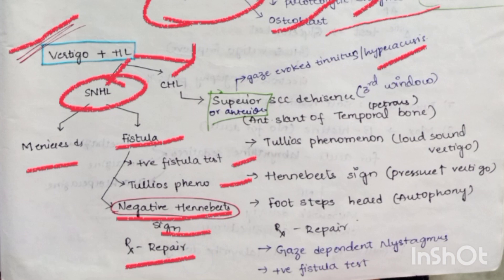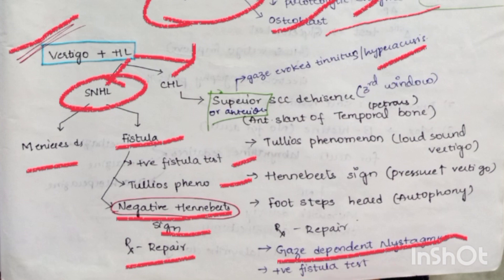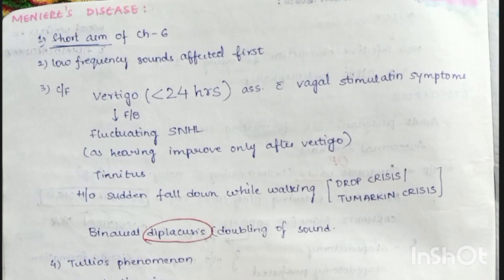If it is conductive hearing loss, consider superior semicircular canal dehiscence (anterior semicircular canal dehiscence) or third window effect. Features include gaze-evoked tinnitus, hyperacusis, Tullio phenomenon (vertigo on hearing loud sounds), Hennebert sign (increasing pressure increases vertigo), and autophony (hearing own footsteps — water phony). Gaze-dependent nystagmus and positive fistula test are seen. Treatment is surgical repair.